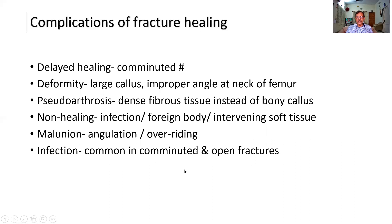The complications of fracture healing — this can be a question. One is delayed healing, depending on the type of fracture; for example, a communited fracture with multiple fragments is difficult to heal. Deformity — when the callus is too large or at an improper angle, notoriously at the neck of the femur. Pseudoarthrosis — sometimes there is more covering with cartilage and dense fibrous tissue, resulting in a joint forming, called a pseudoarthrosis. Non-healing — can be because of infection, foreign body, or intervening soft tissue. Malunion — angulation or overriding. Infection — common in communited fractures and open fractures.